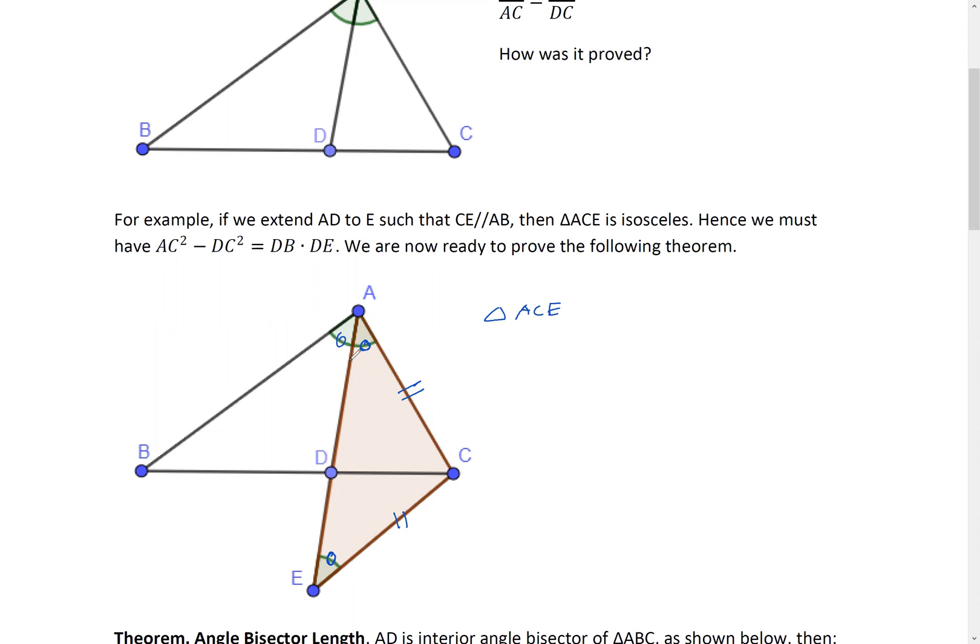And seeing an isosceles triangle, it makes me wonder the little theorem that we learn. What does it say, it will give us AC squared minus CD squared equals DA times DE. And let's try to put all the ratios in play as well. The angle bisector theorem give us some ratios.